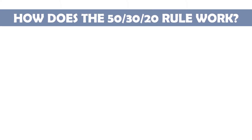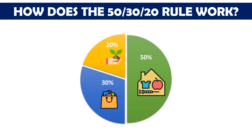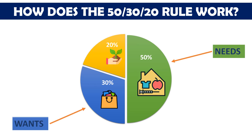Let's see how does the 50-30-20 rule work. This rule simplifies budgeting by dividing your after-tax income into just three spending categories: needs, wants, and savings.